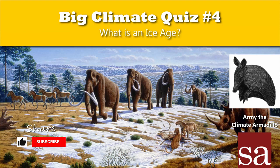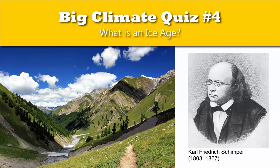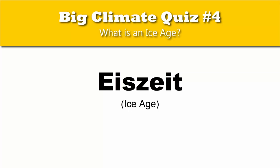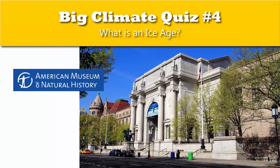Big climate quiz number four: What is an ice age? There's a great deal of confusion on this term. When the term was first introduced by German botanist Carl Frederick Schemper in 1837, we still knew very little about Earth's past. The term was used to describe a time when glaciers were more plentiful, and when the force of that ice had deposited the boulders Schemper had studied.